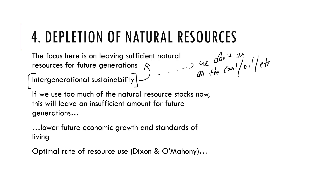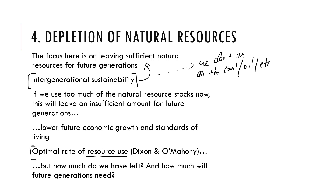Dixon and Marty talk about the optimal rate of resource use — where economies work out how much they can use of their existing stocks while leaving some for future generations. The problem is: how much do we have left? How can we accurately figure out what our natural resource stocks are, and how much are future generations even going to need?